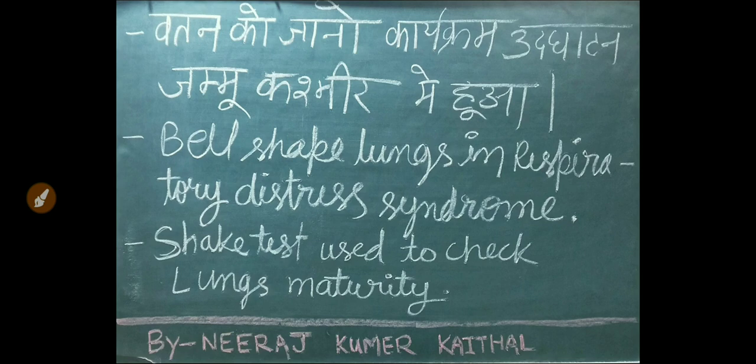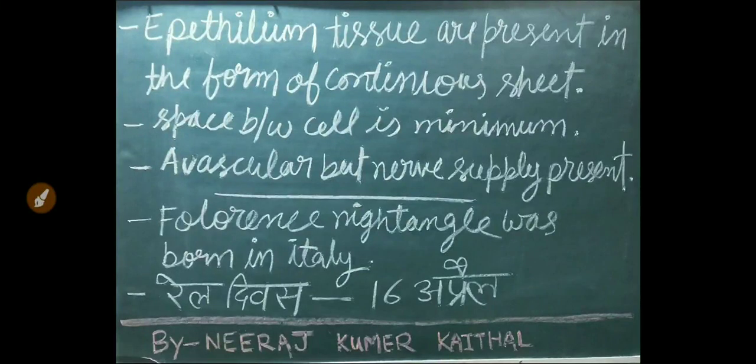In respiratory distress syndrome, lungs may appear bell-shaped. The shake test is used to check lung maturity. Epithelial tissue is present in the form of a continuous sheet; space between epithelial tissue cells is minimal. These tissues are avascular but have nerve supply.